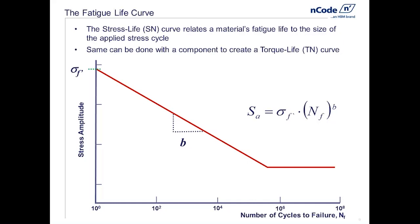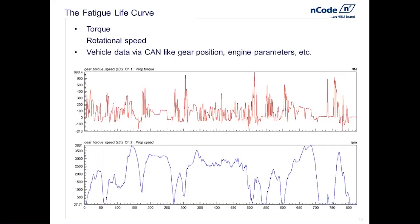The other side of the equation we need to think about is what is the customer doing that will unfortunately promote fatigue? Most customers use things — and doubly unfortunate is that many customers abuse things or use them in creative ways we may not have anticipated. So we need measured data to help us understand how a customer actually uses these powertrain components. I've got pictures showing typical data collected for this type of exercise: torque in red at the top, and rotational speed of a shaft in blue at the bottom. This might be torque and speed input into a transmission, or crankshaft torque coming out of a differential.